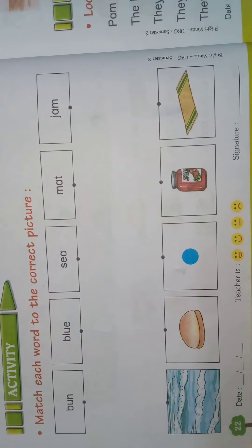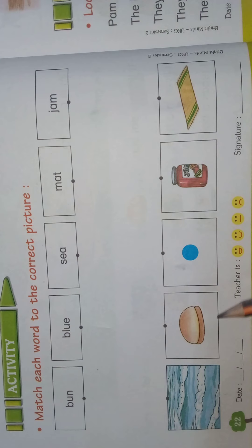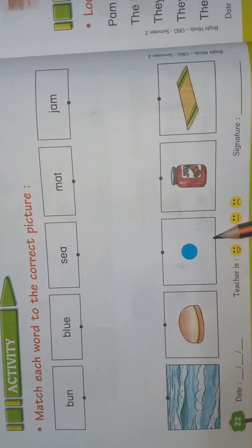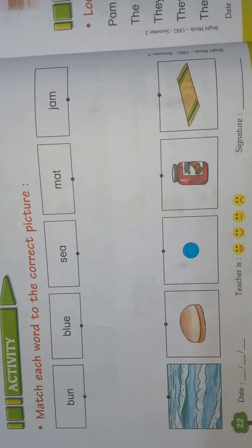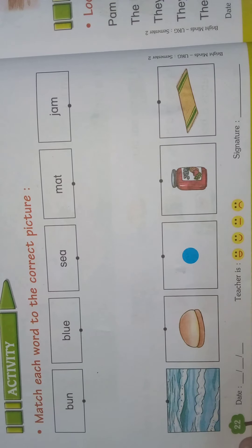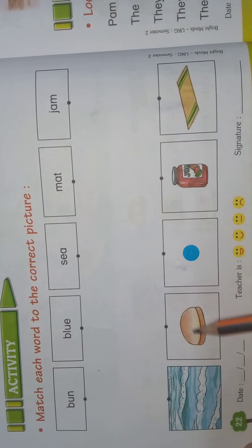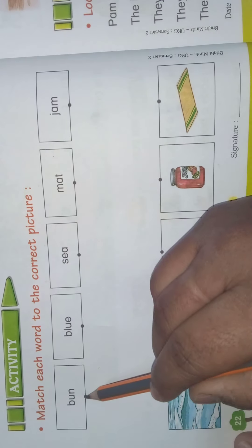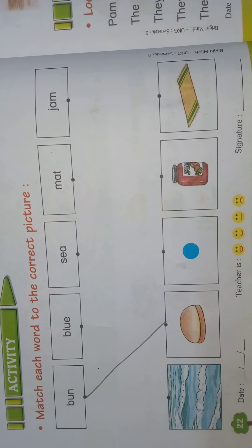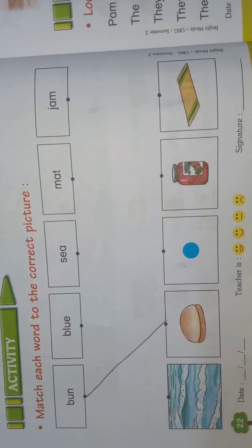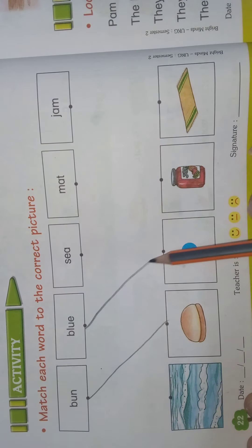Now we will see what they have given: sea picture, bun picture, blue color, jam, mat. B-U-N bun — where is bun here, children? Yes, here it is. B-U-N bun. Next, B-L-U-E blue — where is blue here, children? Yes, here it is, blue color.